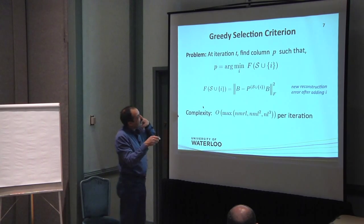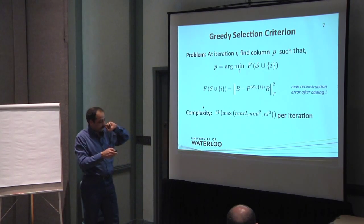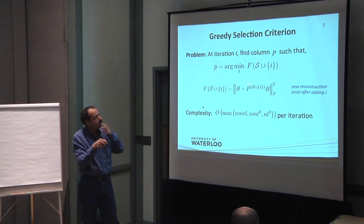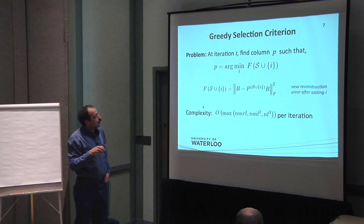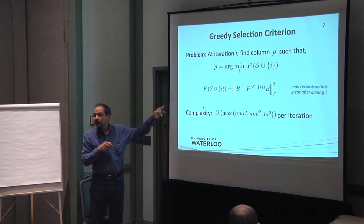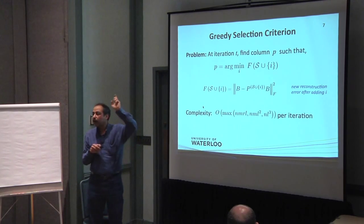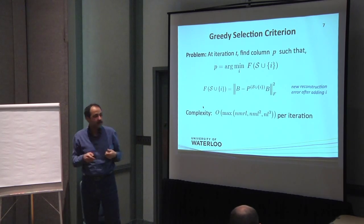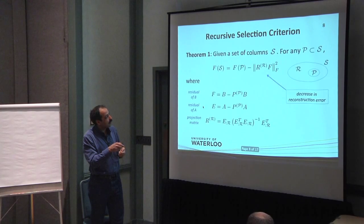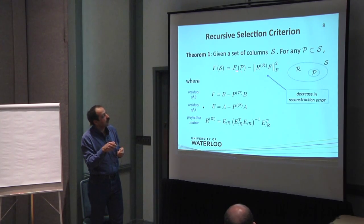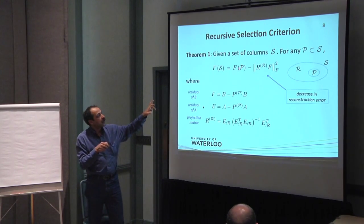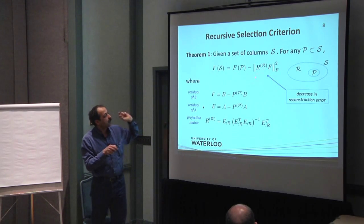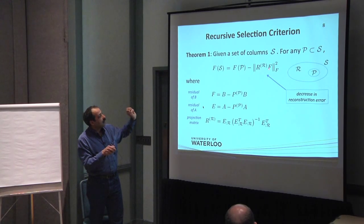And this is basically the starting point for an efficient greedy algorithm here. So my problem is that I know what the cost function in terms of subset S is, and I'm adding a new column I, and I would like to compute this new objective function. How much this column I will improve my objective function. So I can show that there is a recursive function for this cost function of this form. So the value of my objective function is the value of the objective function for a subset of S, S minus this component. And this component is basically based on F, which is a residual of B.